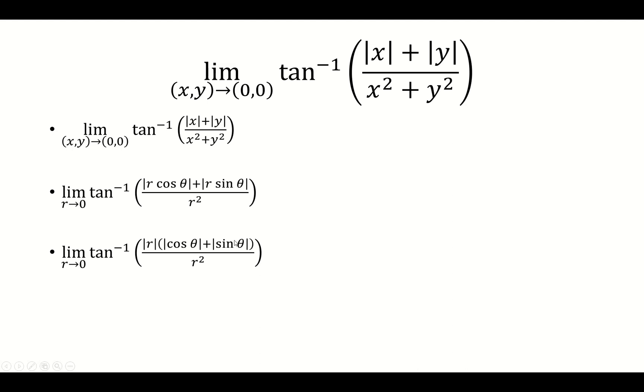And now we're going to consider r approaching 0 from the right and the left, because the absolute value of r depends on what direction we're looking at. So if we approach 0 from the right, the absolute value of r just equals r, and that's going to simplify with the denominator.